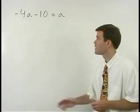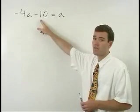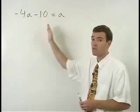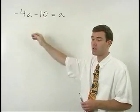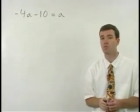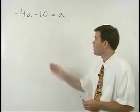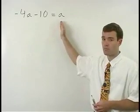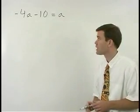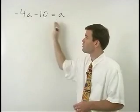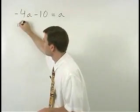The difference, however, is that our number, negative 10, appears on the left side of the equation. So the most efficient way to do this problem is to put our variables together on the right side of the equation. And the way we do that is by adding 4a to both sides.